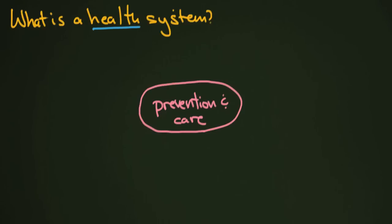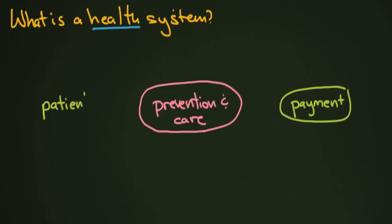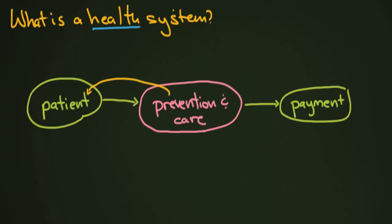Health care systems are often built to pay for this, so we'll put payment over here. The patient is really important, so I'll include the patient as well. The patient goes and gets the care, and then somehow it's paid for. In a traditional liberal economic sense, the patient goes to a hospital or clinic, gets their care, and pays for it. Prevention is mostly done by the patient themselves — the doctor says don't do something, and if the patient doesn't follow that advice, they pay for it. That's just a very simple system.